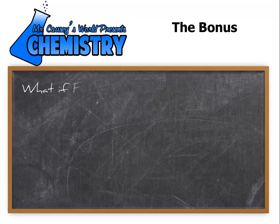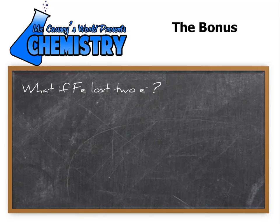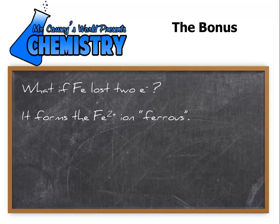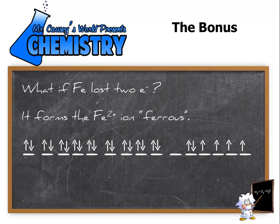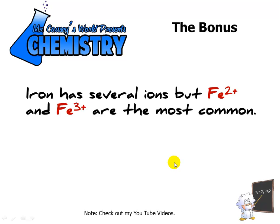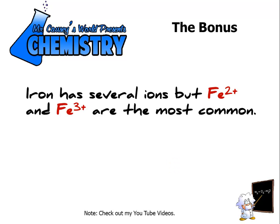Let's do a bonus. What if iron lost two electrons? It would form the iron two-plus ion, or the ferrous ion, and it would look just like that. Notice it lost its two electrons. Iron has several ions, but iron two (Fe2+) and iron three are the most common.